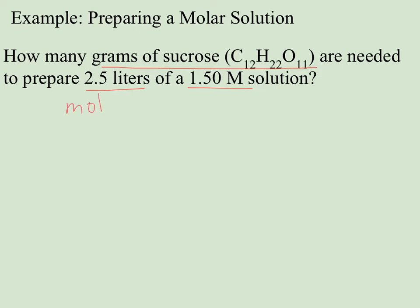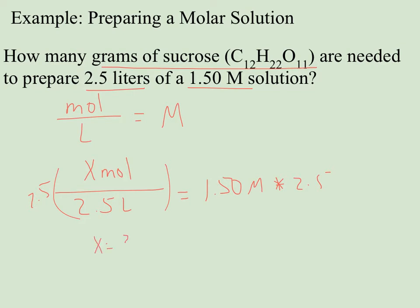So again, I've got two of my three variables, I'm being asked to find the third one. So if I look at what I have, I'm being asked to come up with grams, which I will get from my moles. So I need to find x moles of sucrose for a 2.5 liter solution with a molarity of 1.50. So if I multiply both sides by 2.5, I find out that I'm talking about 3.75 moles of my sucrose, C12H22O11.